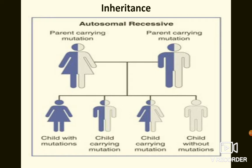When two carriers get married, among their four children, one will be affected because they receive the mutated allele from both parents. Two children will be carriers, not showing any symptoms, and one child will be perfectly normal. So the ratio for an autosomal recessive disorder is one affected, two carriers, and one normal out of four individuals. This is how the mutated gene is inherited through autosomal recessive inheritance.